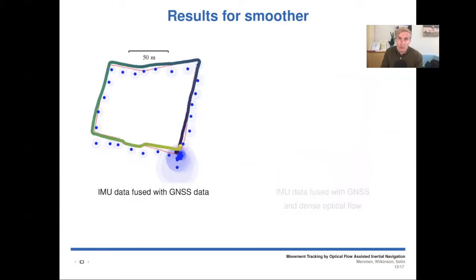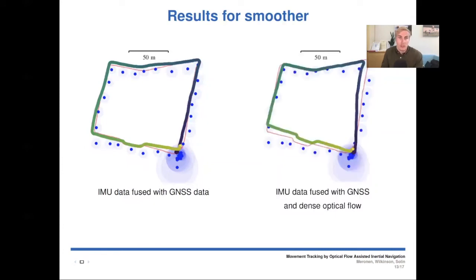Here we have corresponding smoother results for the same setups with the same data. Here we can see that the differences are not very big, but when the dense optical flow is used, the shape of the track is slightly better, but the scale is a little bit too small.